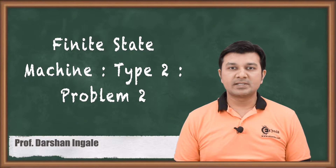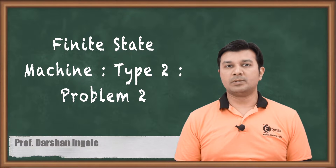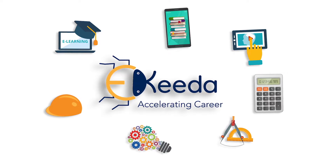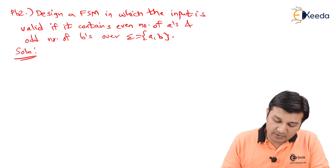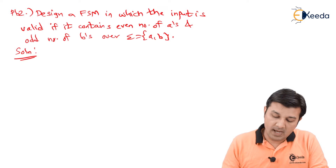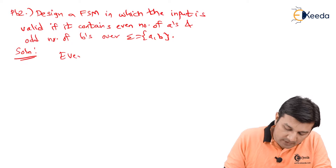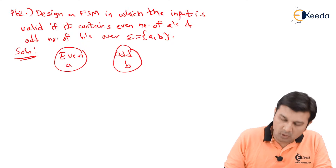Hello friends, welcome to the next session. Now we are going to study the second problem in type 2 problems. The problem is to design a FSM in which the input is valid if it contains an even number of A's and odd number of B's. So A's should be even and B's should be odd.